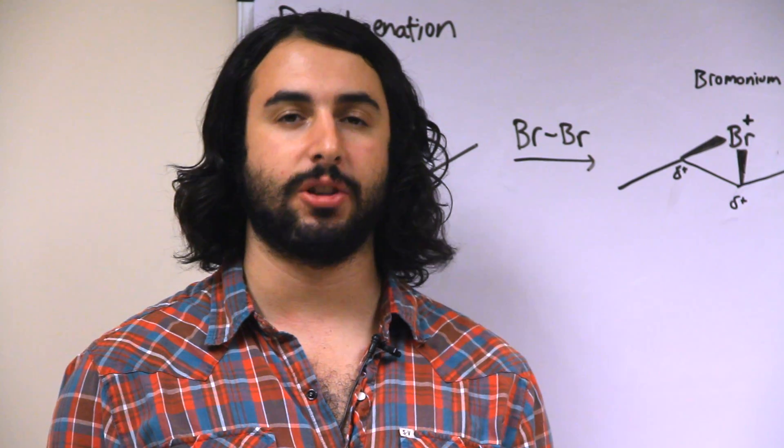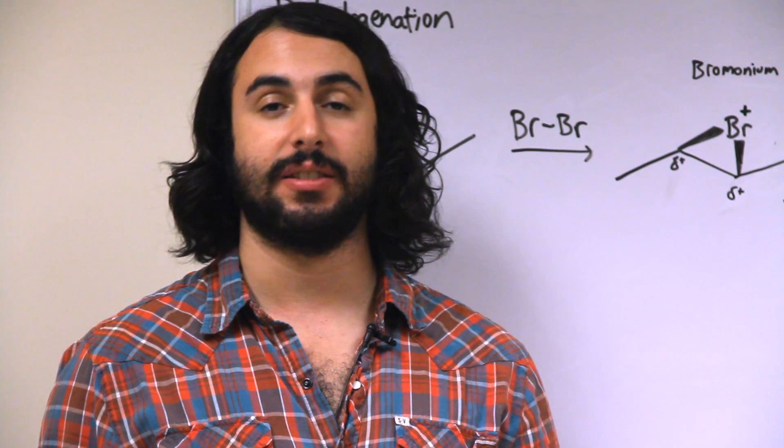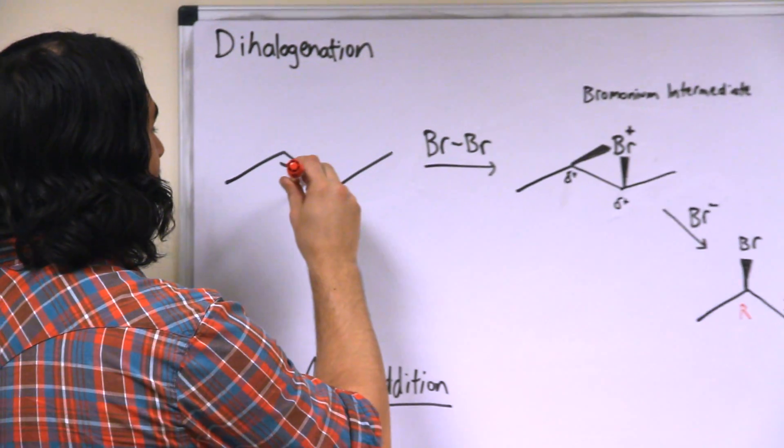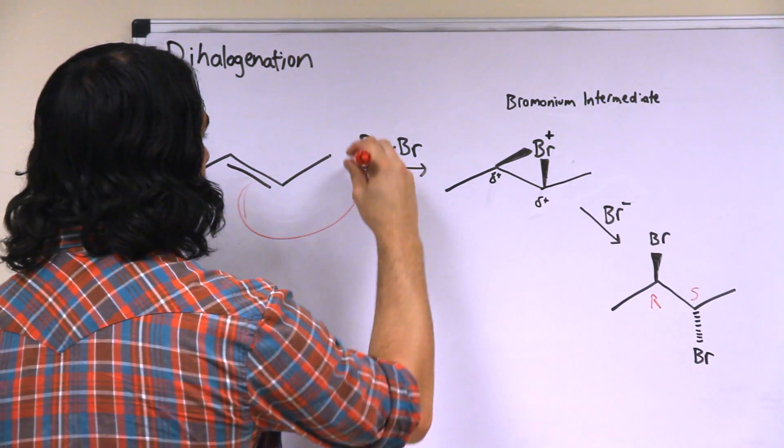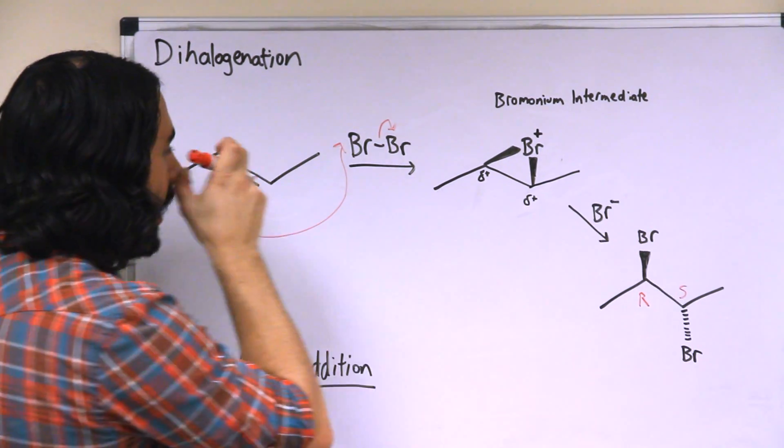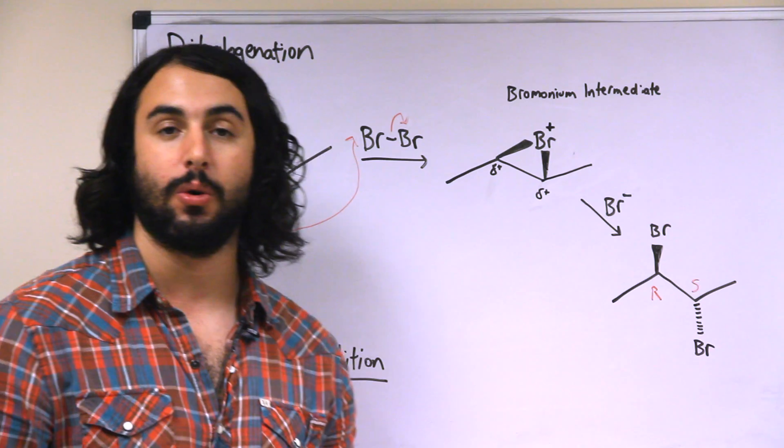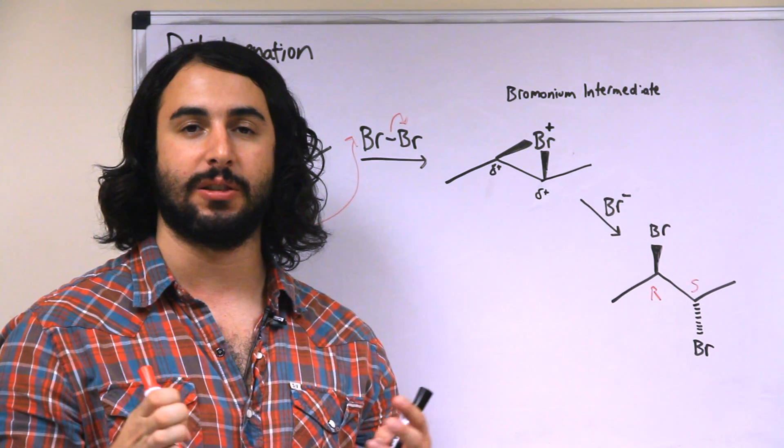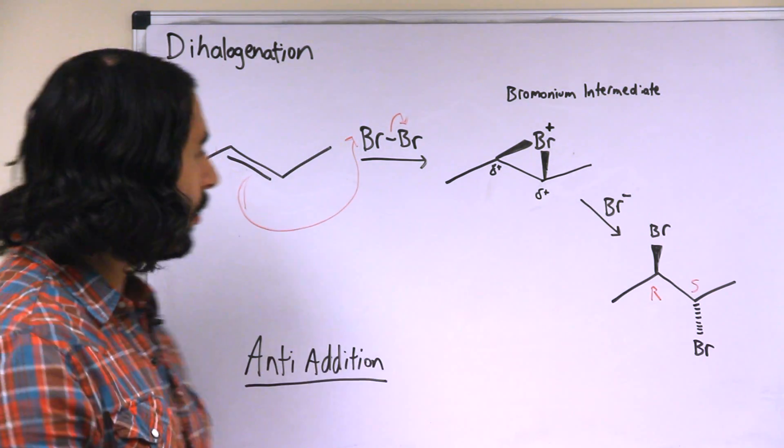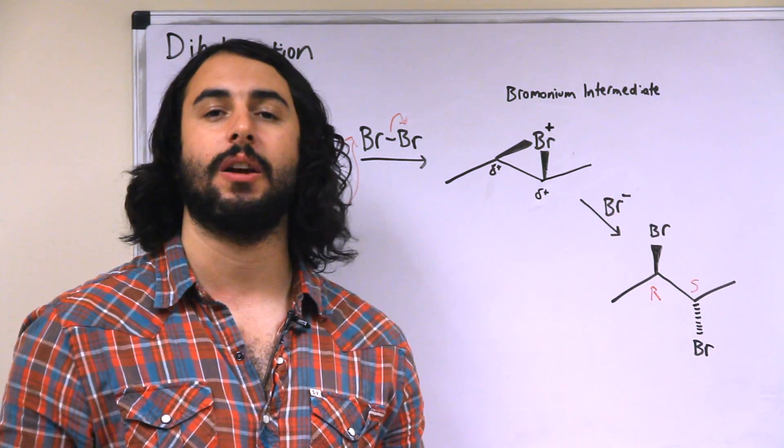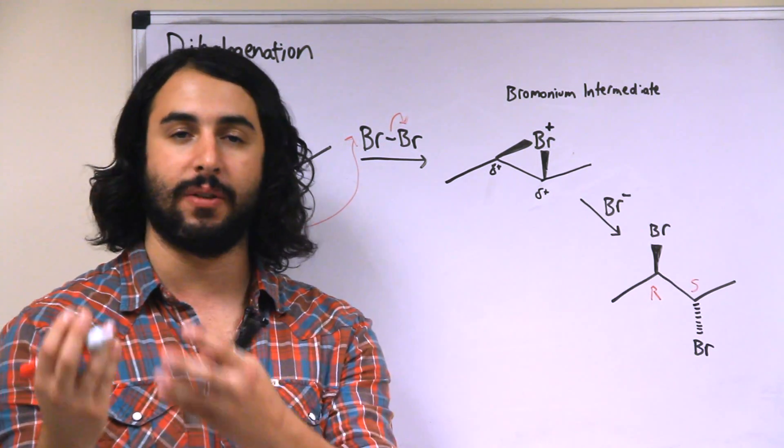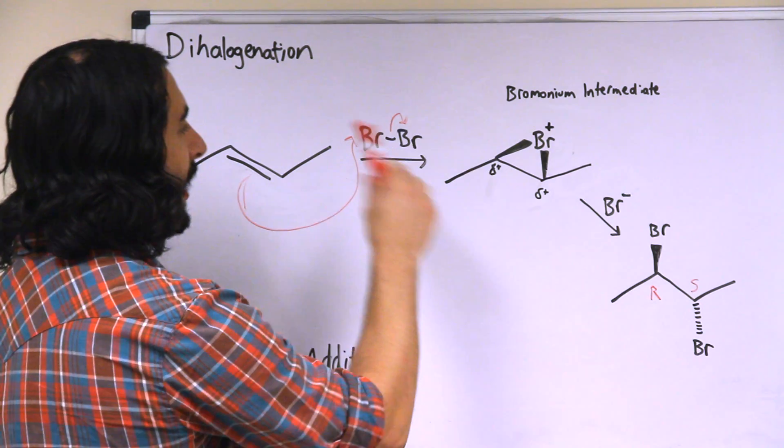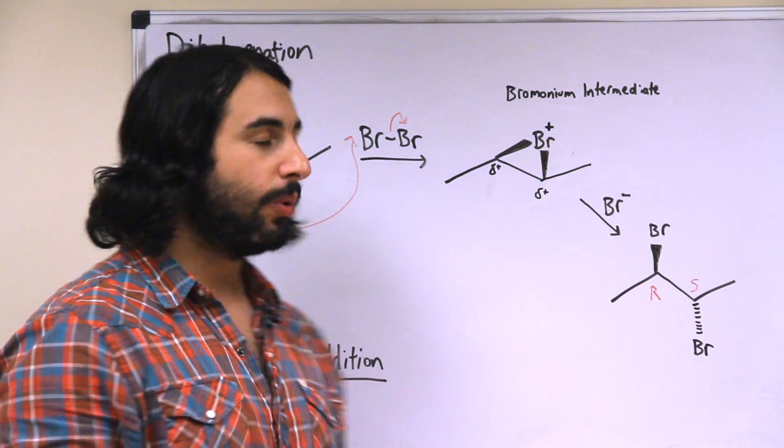The last addition reaction we want to look at is dihalogenation. As you could guess, this is where two halogen atoms are attached to the two carbons participating in the double bond. Once again we're going to see the pi bond behaving as the nucleophile. While it would seem a little bit strange that a nonpolar bromine molecule could behave as the electrophile, it's just simply the case that bromine atoms are pretty large and so this electron cloud is pretty polarizable. So a pi bond can generate enough of a momentary dipole on a bromine molecule that one of them can become slightly partially positive and now you have an electrophile.